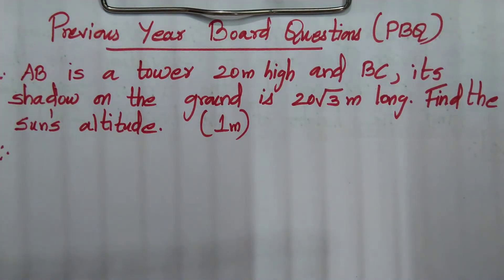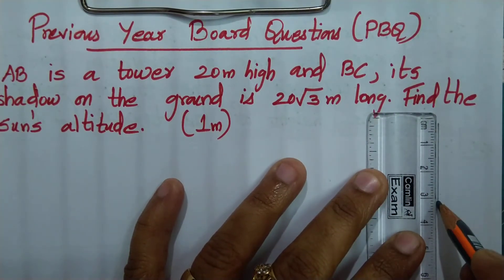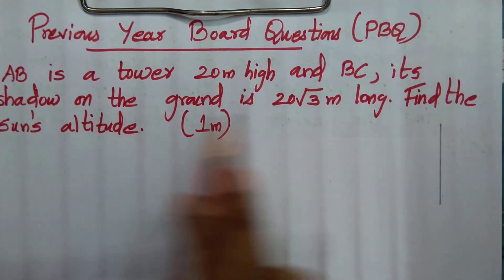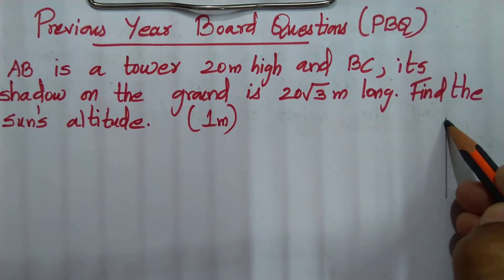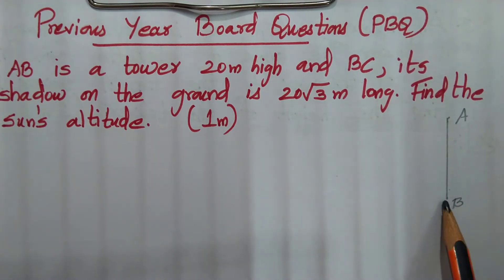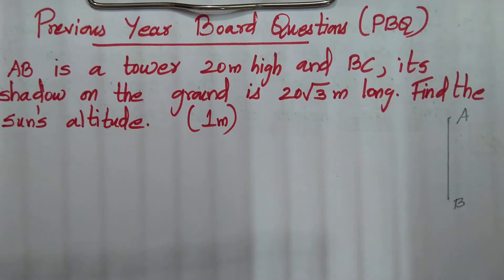This is a question we have already looked at as an NCERT example. We will draw the figure first. AB is a tower — I have drawn a tower over here. AB is the tower and BC is the shadow.